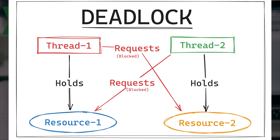A deadlock in Java occurs when two or more threads are blocked indefinitely. In this situation, each thread is waiting for a resource held by the other thread. Here we can see the first thread is already holding a lock on resource one and it is requesting the lock on resource two. But the second thread also holds the lock on resource two and is requesting the lock on resource one.